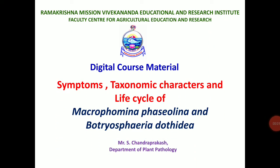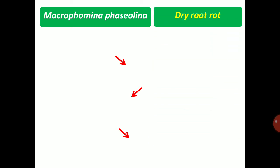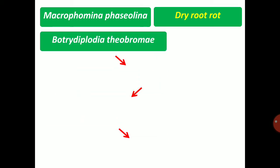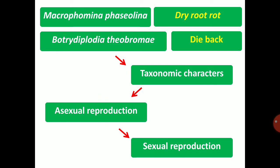Good morning students. Today's class is about symptoms, taxonomic characters and life cycle of Macrophomina fasciolina and Botryodiplodia theobromi. In this class we will study about Macrophomina fasciolina which causes dry root rot of pulses. Botryodiplodia theobromi causes die back disease of several fruit crops and especially in rose, where die back is one of the important diseases. Next we cover taxonomic characters, asexual reproduction and sexual reproduction of these pathogens.